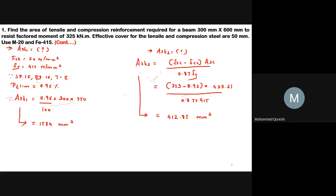The total tension reinforcement area is Ast = Ast1 + Ast2 = 1584 + 412.85 = 1996.85 mm².